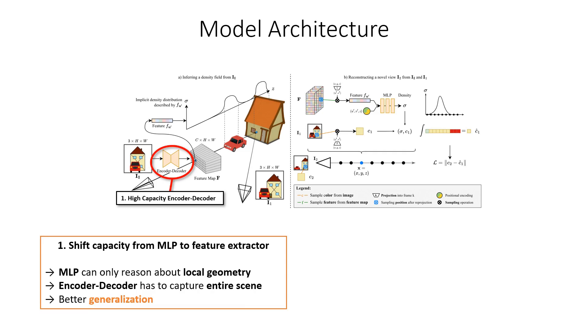In turn, the encoder-decoder network has to capture the entire scene geometry and produce very meaningful features. This change is beneficial for learning and generalization, as the encoder-decoder is much better at capturing the context of an entire image compared to an MLP, which would only receive local training signals.